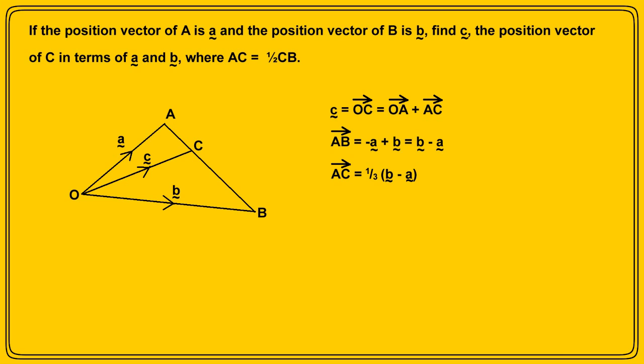Substituting this into C equals OA plus AC, we get C equals A plus one third of B minus A, which juggling the algebra comes to two thirds of A plus one third of B. And there we are, that's the position vector of point C.